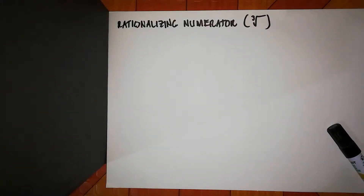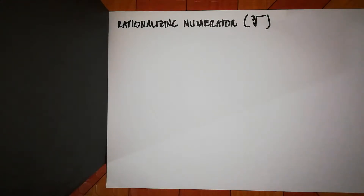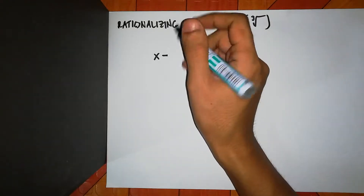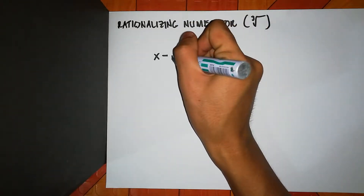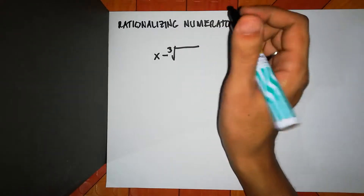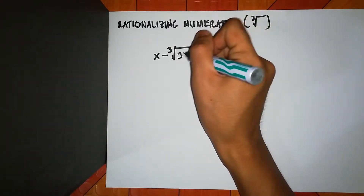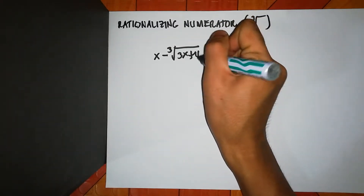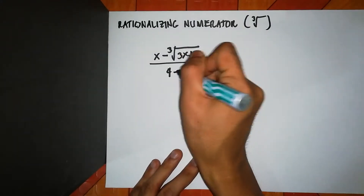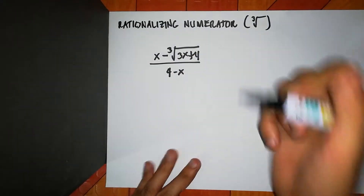In this video, I will teach you how to rationalize the numerator involving cube root. So say for example, I have x minus cube root of 3x plus 4, divided by 4 minus x.